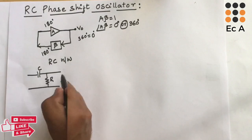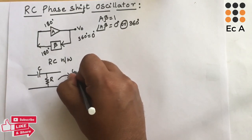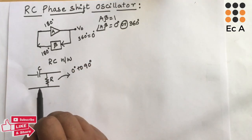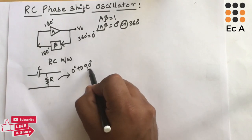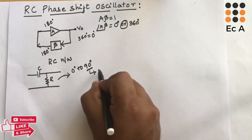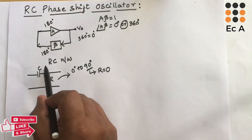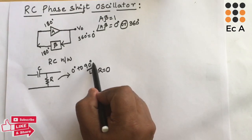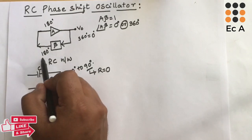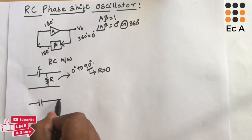If we consider a single capacitor-resistor network, it will provide a phase shift in the range of 0° to 90°. The maximum phase shift provided by a single RC network is 90°, and this maximum of 90° is obtained when the resistor value becomes zero.